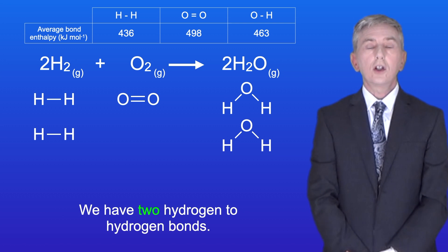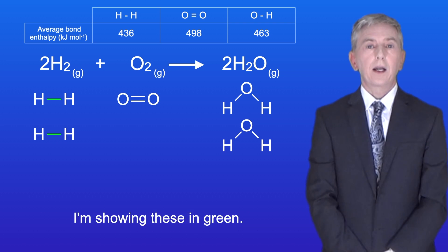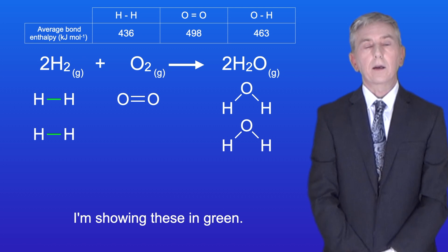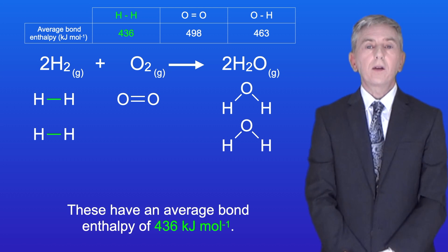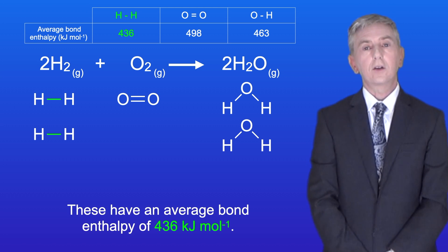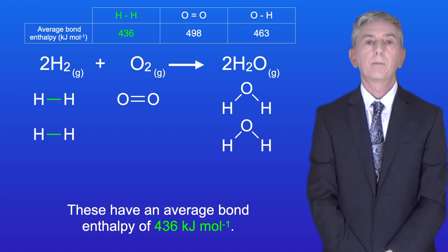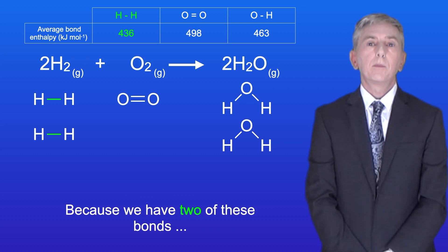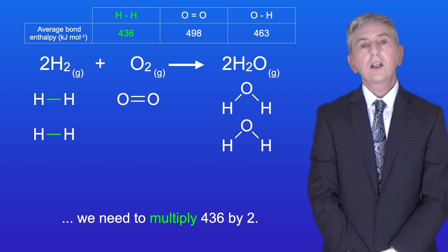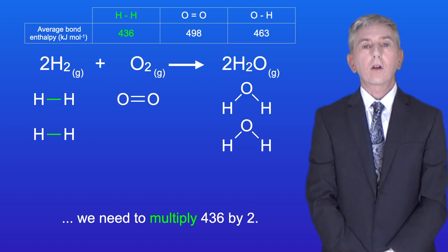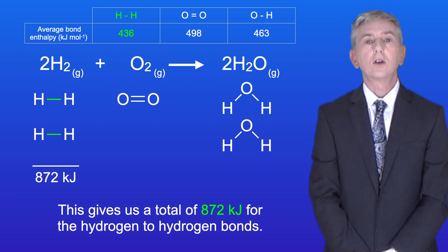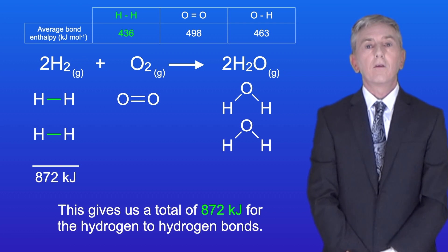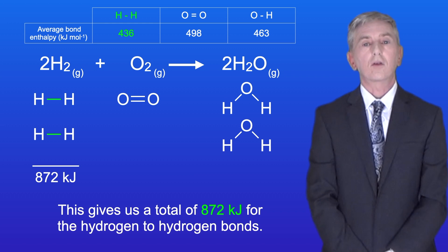We've got two hydrogen to hydrogen bonds, shown here in green. These have an average bond enthalpy of 436 kilojoules per mole. Because we've got two of these bonds we need to multiply 436 by 2, giving us a total of 872 kilojoules for the hydrogen to hydrogen bonds.